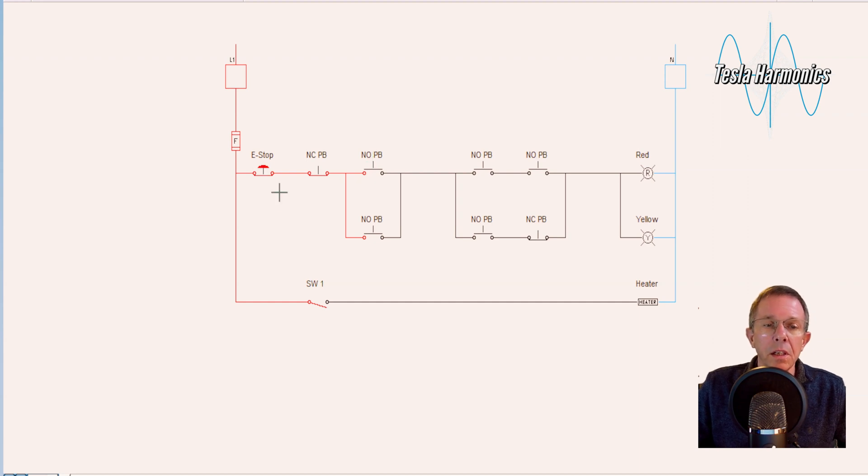In this circuit we have the inputs wired in series and parallel and series parallel. Since the inputs don't burn power, I can put them in any configuration that I want to. Like right here I have the red light and the yellow light wired in parallel, and then on another rung I have the heater.